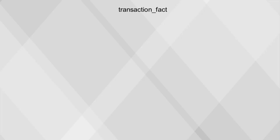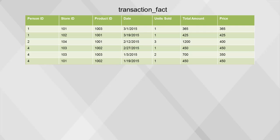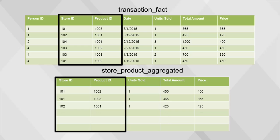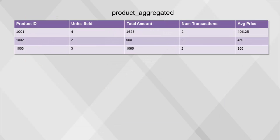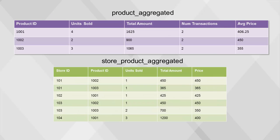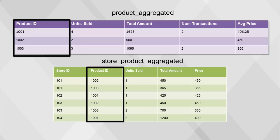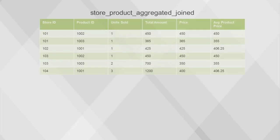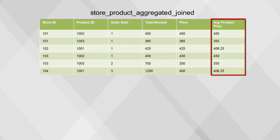We also need to aggregate at the store and product level. This removes the customer and date level information, giving us the totals for each store and product combination. Due to the limitations of this example, the aggregation does not result in fewer rows as it normally would. The resulting table is, however, sorted by store ID and product ID. The next step is to join the product aggregate table to the store product aggregate table using product ID as the common field between the two tables.